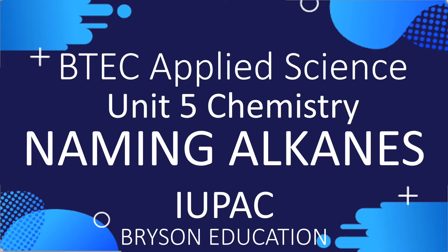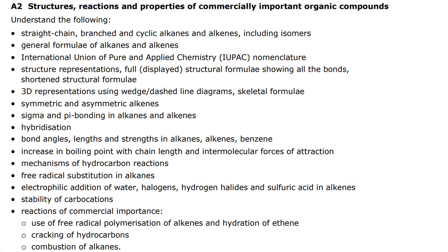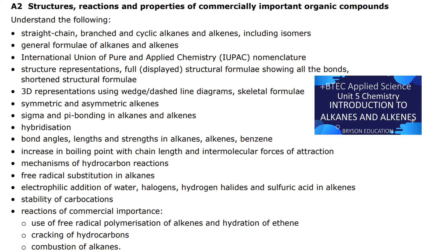Hello, welcome to my channel on chemistry lessons. This is BTEC Applied Science Unit 5 Chemistry, and we're looking at naming alkanes using the IUPAC rules. This sits within learning aim A2, and if you haven't seen the previous video on the introduction to alkanes and alkenes, I suggest you start there first, as it covers the introductory points.